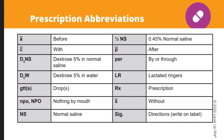Other common abbreviations include: an A with a line over it, which means before; a C with a line over it, which means with; D5NS means dextrose 5% in normal saline; D5W means dextrose 5% in water; GTT means drop; NPO means nothing by mouth; NS means normal saline; half NS means 0.45% normal saline; a P with a line over it means after; per means by or through; LR means lactated Ringer's; RX means prescription; an S with a line over it means without; and SIG means directions.